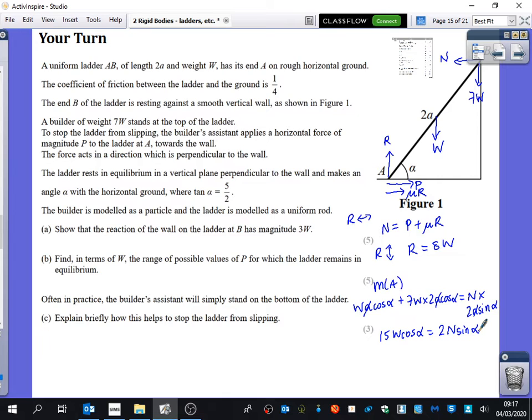What did you do with the trick there? Divide by cos. So you get 15W equals 2N tan alpha. And tan alpha is 5 over 2. So 5 over 2 times 5 is 5. So you just get 5N. And so then W, sorry, 3W is equal to N when you divide by 5.